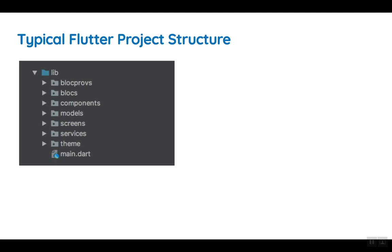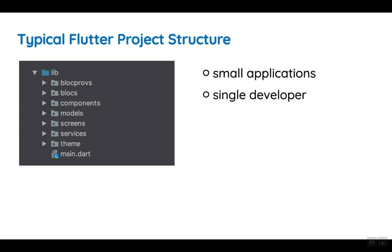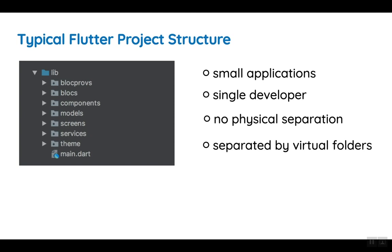Let us look at a typical Flutter project structure. This is how a typical project structure looks like. It is okay for somebody starting out — it is better than not having a structure at all. But this structure only works for small applications and is often maintained by a single developer. In such a structure, there is no physical separation, and virtual folders are used to separate the different layers within the project. Looking at this project structure, it is hard to determine what kind of application this is.